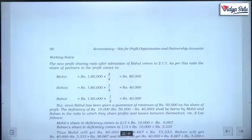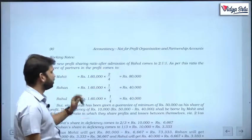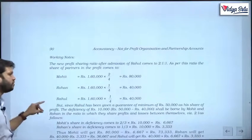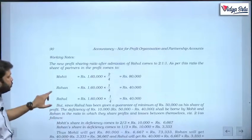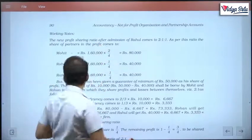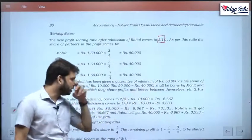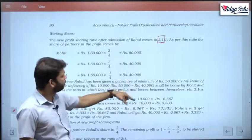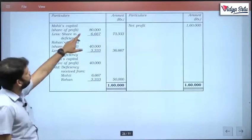Out of 1,60,000: Mohit gets 2/4 = 80,000; Rohan gets 1/4 = 40,000; Rahul gets 1/4 = 40,000. Rahul was promised at least 50,000, but he is only getting 40,000, so the deficit is 10,000. This 10,000 will be given by Mohit and Rohan in their old ratio of 2:1, so Mohit pays 6,667 and Rohan pays 3,333. These amounts are reduced from their shares and added to Rahul's share.